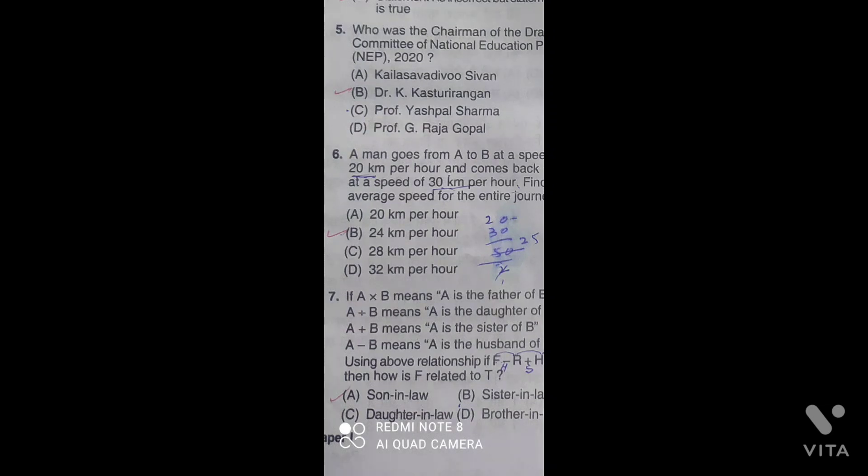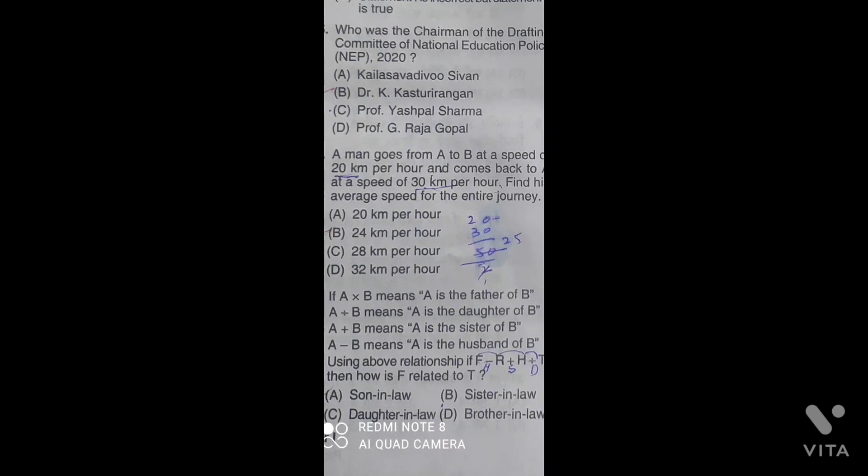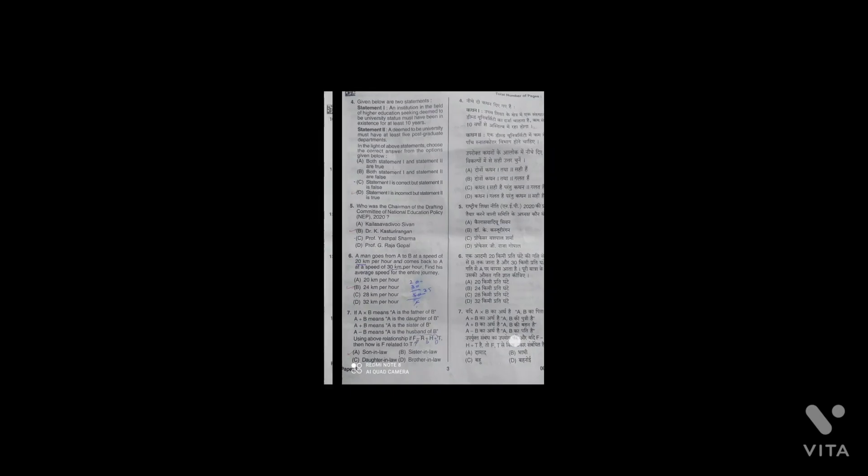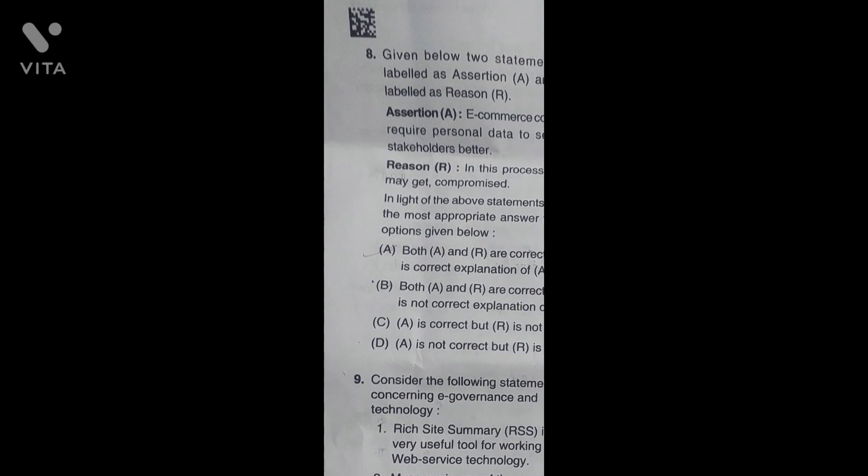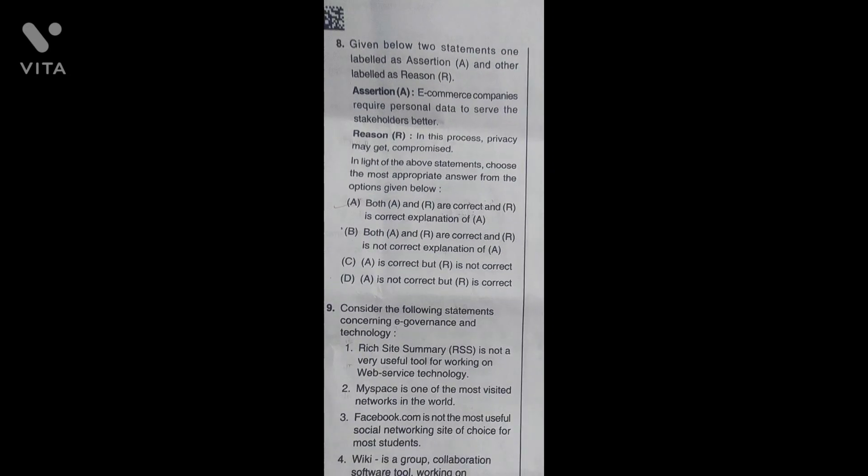Question number 7: Here two persons A and B, we have to see their relations. F is the father of B, R is the daughter of B, H is the husband of B. So if we see the relations, the correct answer is son-in-law.